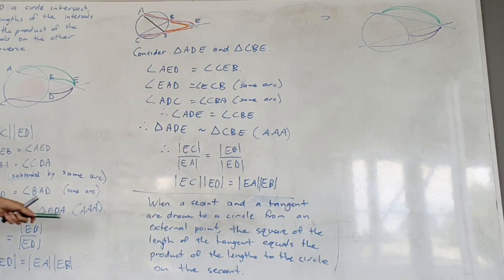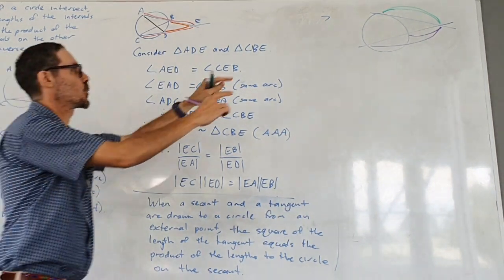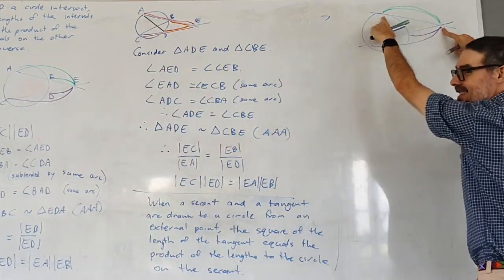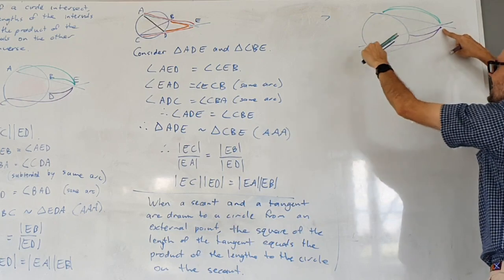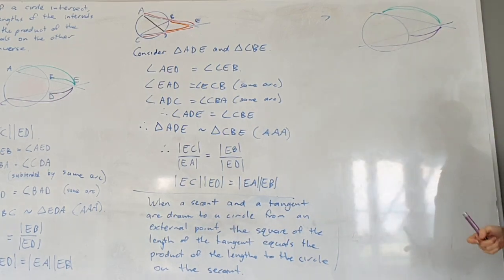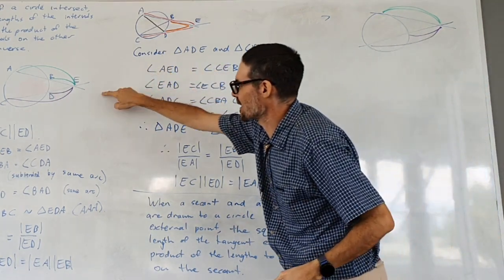That's all this says. The square of the distance along the tangent is the product of the lengths along the secant. It's just a direct consequence of this.